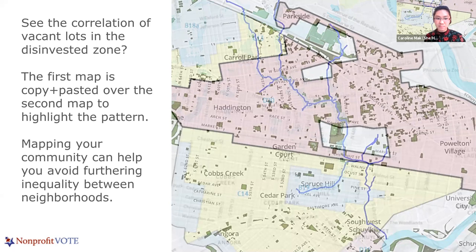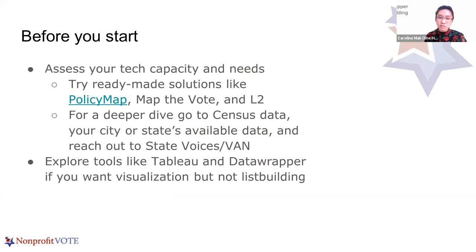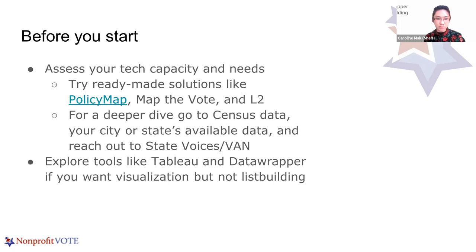Before you start, assess your tech capacity needs. Try ready-made solutions like PolicyMap, Map the Vote, and L2, which you'll hear about today. For a deeper dive, check out census data, google your city and state data if available, and reach out to State Voices after they speak about their voter tools. Tools like Tableau and Data Wrapper are great for visualizing and are free for nonprofits. Now I'm going to quickly show you PolicyMap and what that ready-made solution looks like.